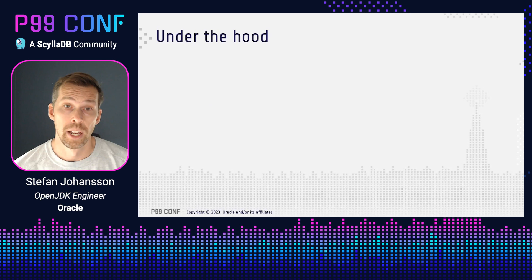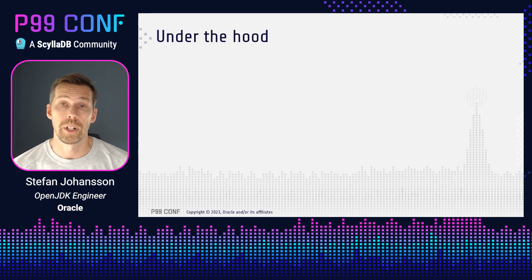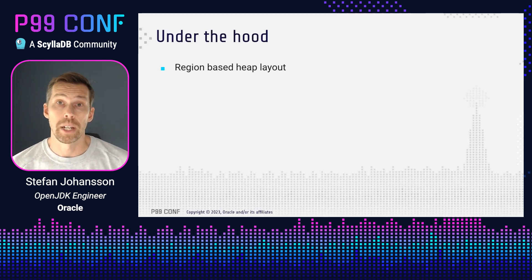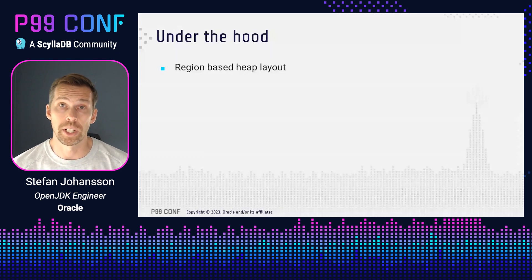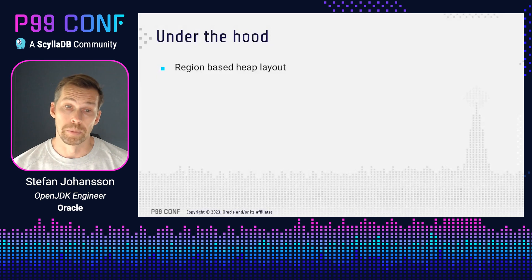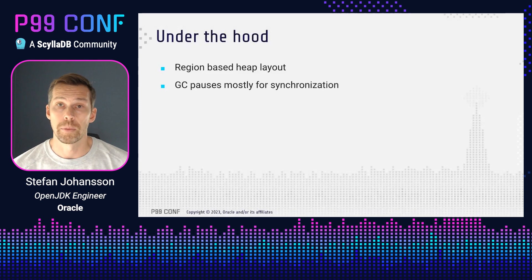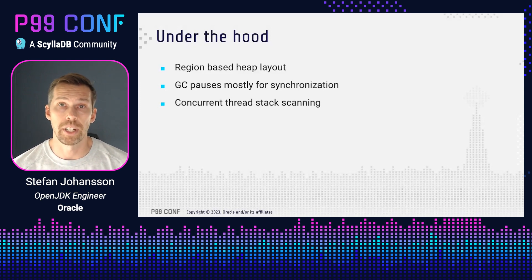This is a very quick introduction to ZGC and we don't really have time to go into the details, but I want to give you a quick glance under the hood. ZGC is what we call a region-based collector, so it has a region-based heap layout. This means that the heap is divided into evenly sized regions, and this gives very good flexibility compared to traditional GCs where the heap layout is decided at startup. As mentioned, we want to have very short GC pauses, and in ZGC they are mostly there to do synchronization — to have a safe transition between different GC phases. ZGC also does something called concurrent thread stack scanning, which means that ZGC can figure out what on the Java application thread stacks needs to be kept alive while the Java application is still running.